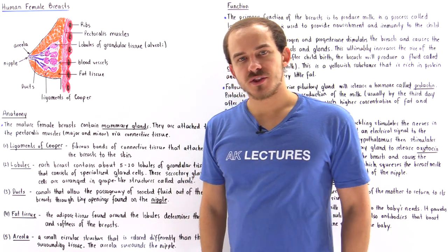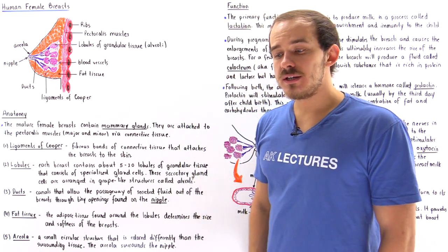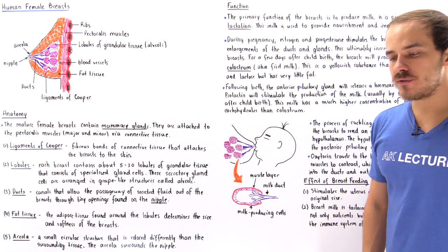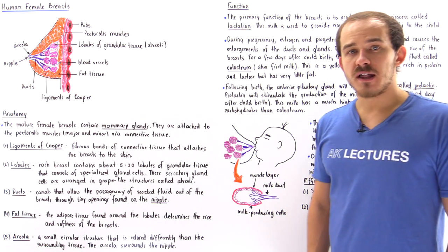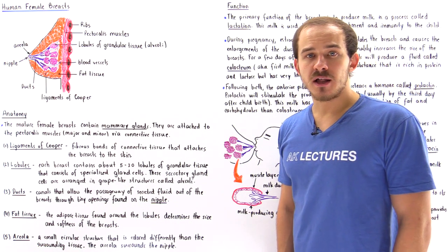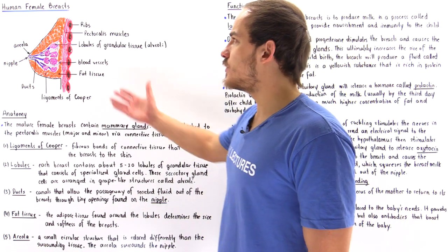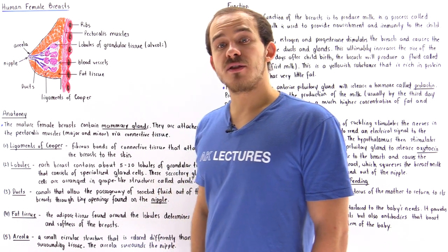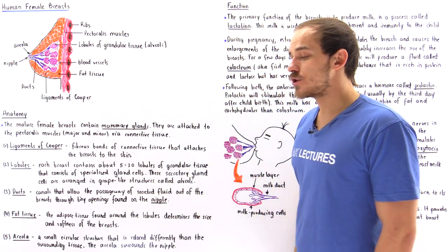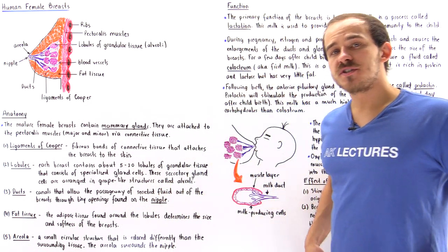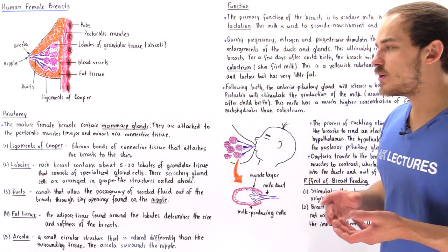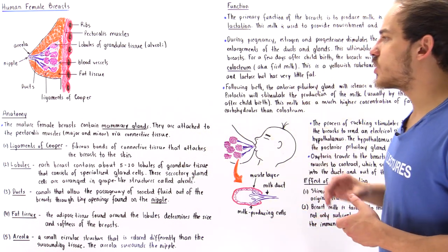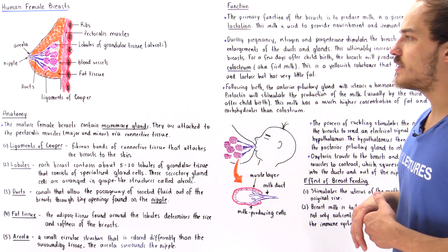Another important organ that is not only involved in the human reproductive cycle but also involved in the development of the child following childbirth is the human female breast, and this will be the focus of this lecture. We're going to begin by briefly focusing on the anatomy of the breast and then we're going to focus on its function.